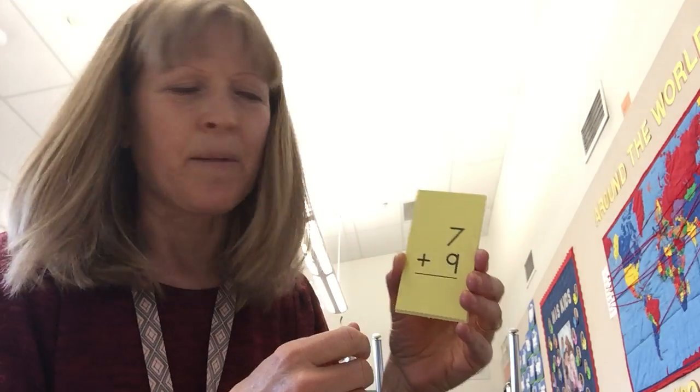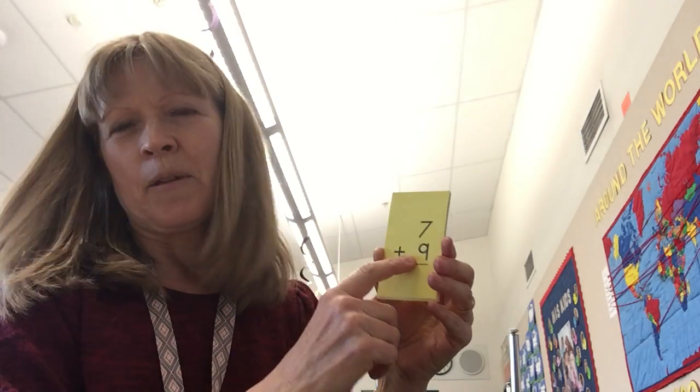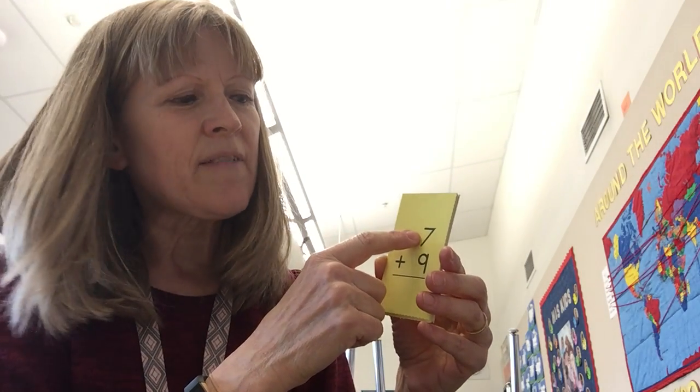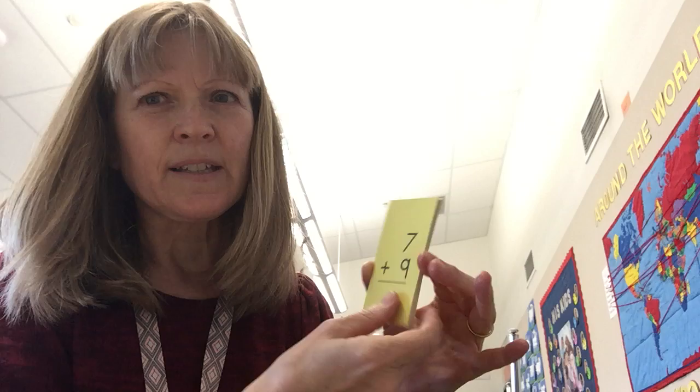You're going to be getting new flashcards to practice, and I want you to practice them like this until you're really good at them. Remember, you're going to look at the number that's not a nine, and you're going to say one less than seven is six. The answer is 16.